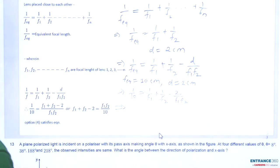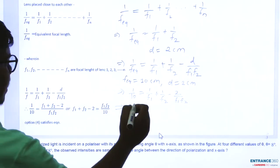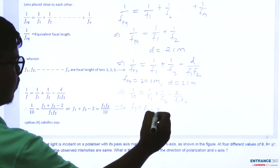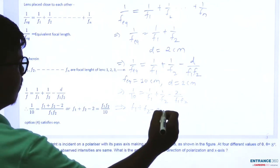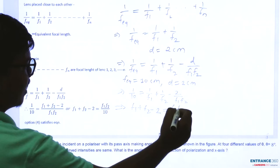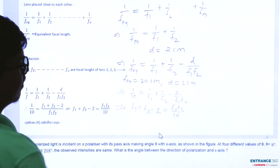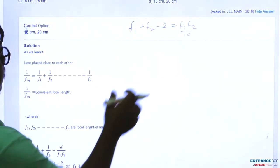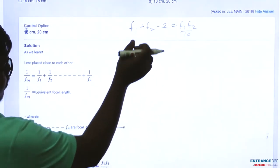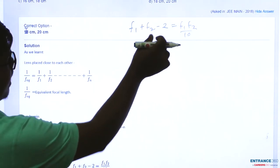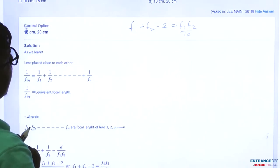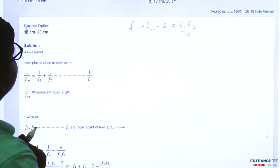Rearranging this equation gives us: F1 plus F2 minus 2 equals F1 times F2 upon 10. This is the equation relating F1 and F2 that we will use to check the given options.